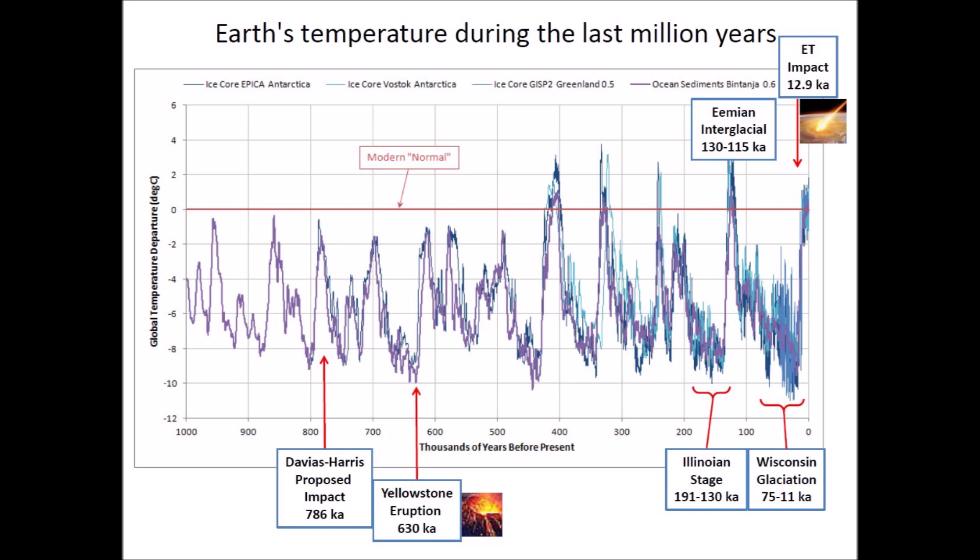We can use a chart of the Earth's temperature during the last million years to identify the time intervals during which it would have been possible to meet the four conditions for the formation of the Carolina Bays. The Wisconsin glaciation extended from approximately 75,000 to 11,000 years ago, and there were several times when ice advanced to cover the Great Lakes. The Younger Dryas was a cold period at the end of the Wisconsin glaciation starting 12,900 years ago that lasted 1,300 years.